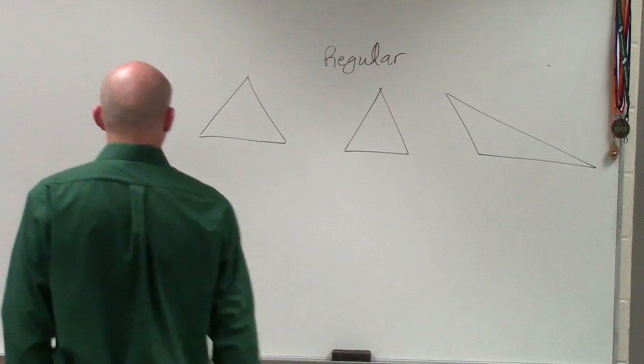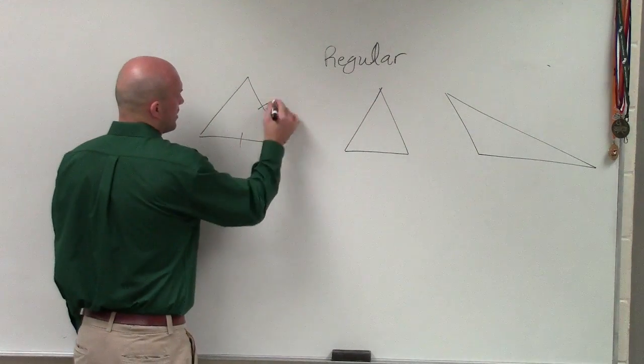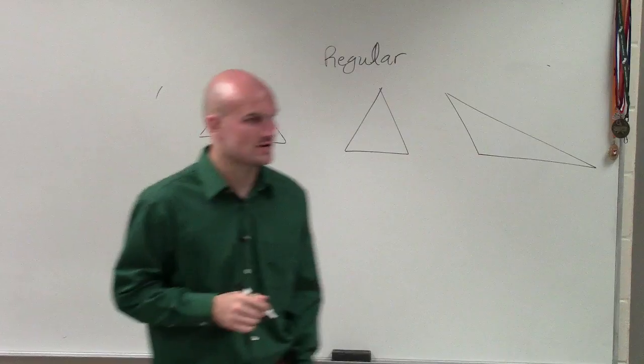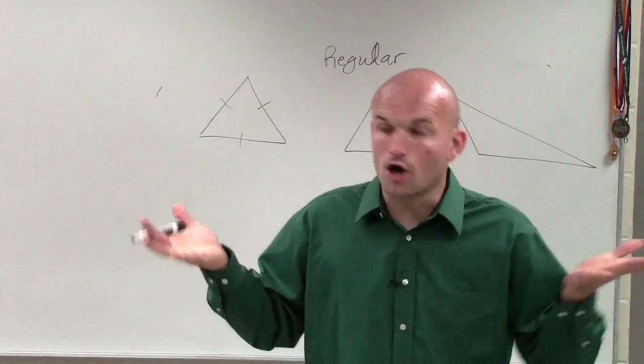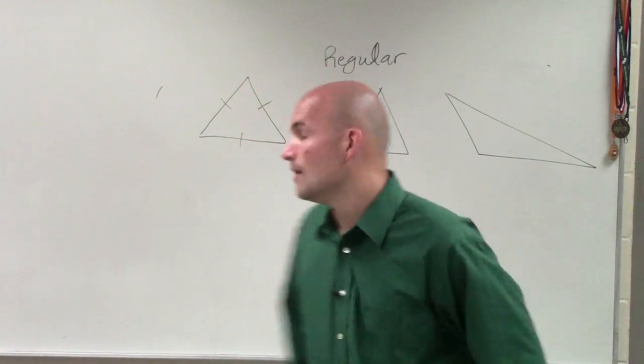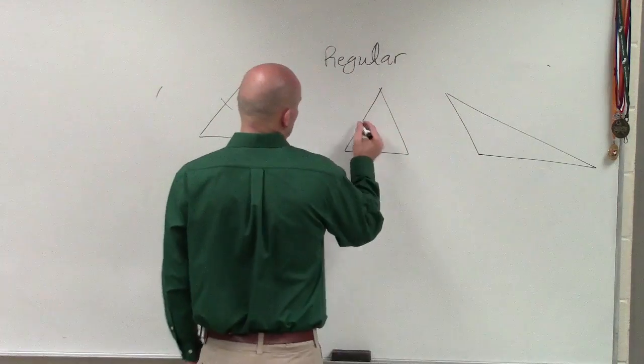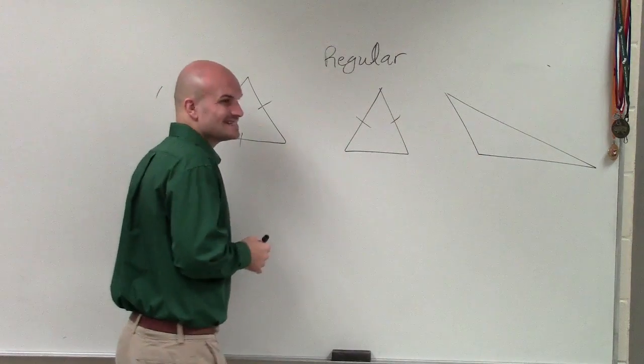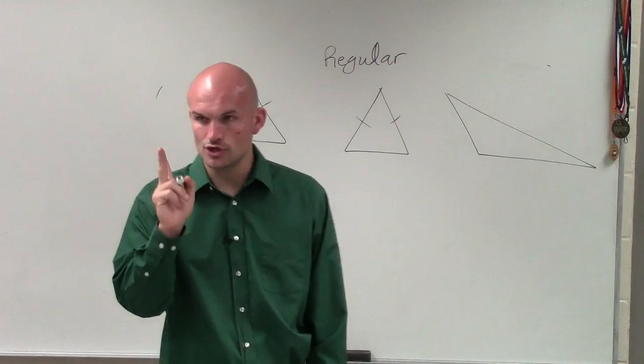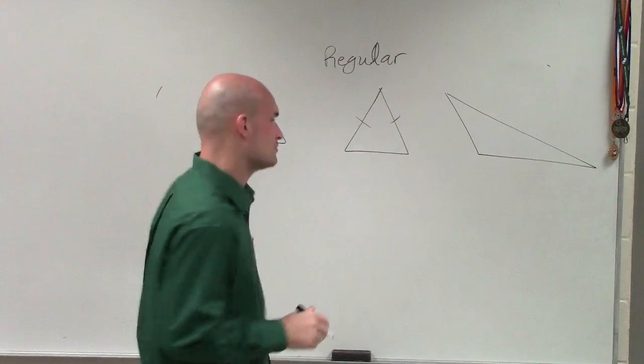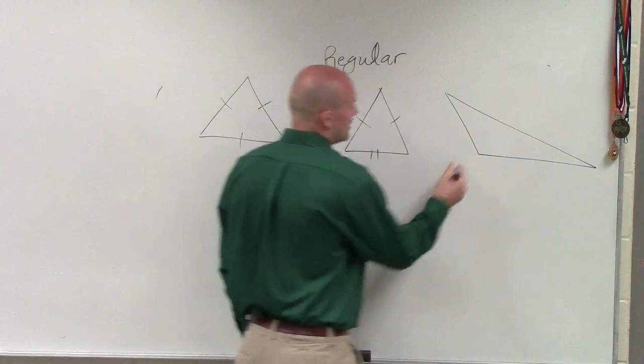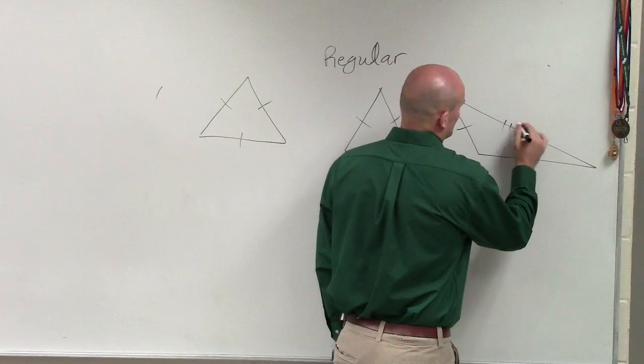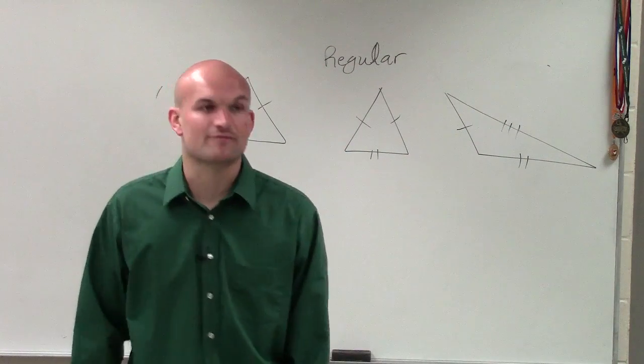The first type of triangle was what we call an equilateral triangle, where all three sides of the triangle were equal to each other. Then we also talked about an isosceles triangle, where only two of your side lengths are equal to each other. And then there's what we call the scalene triangle, where all three sides are different.